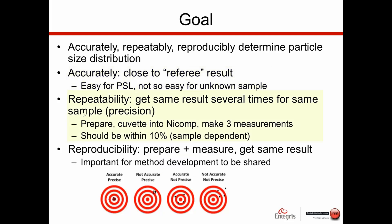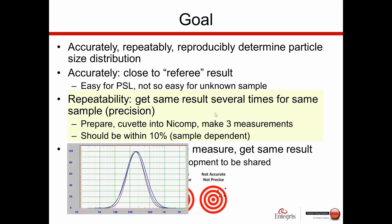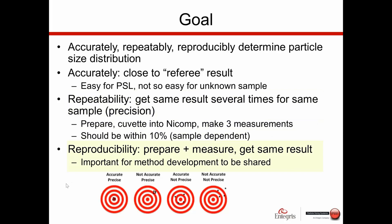Repeatability is usually defined as: prepare a sample, place it into the instrument, make three measurements, and check to see if it is repeatable — we want to see those within at least 10%. When we talk about reproducibility, this is where we prepare the sample, measure it, take an answer, and then repeat the whole process — sample prep, measure — and ask: do we get the same answer?